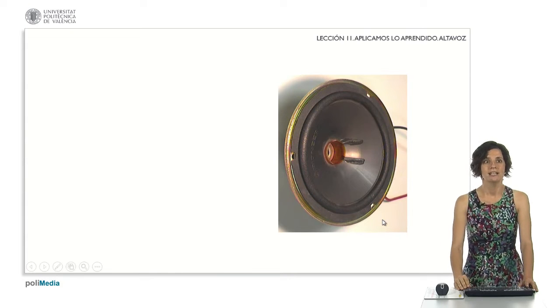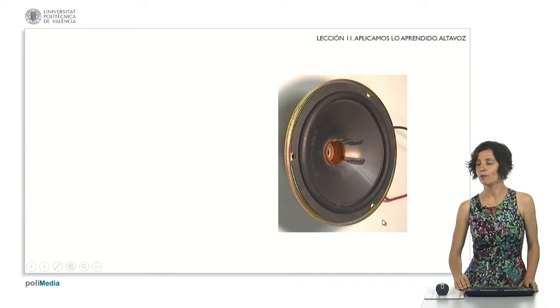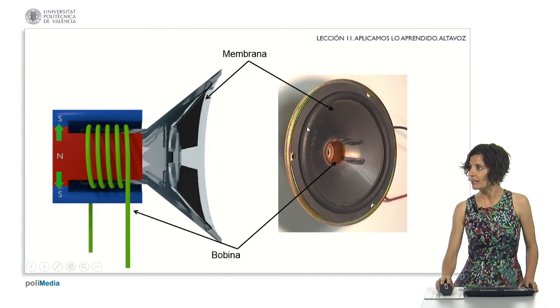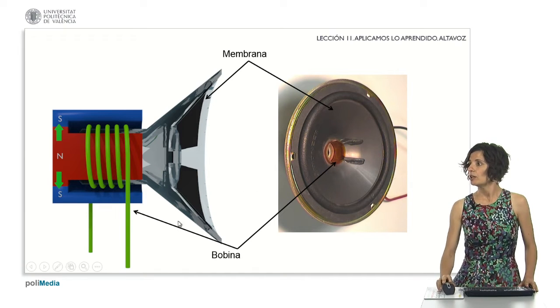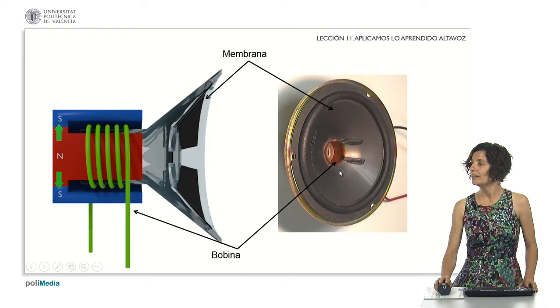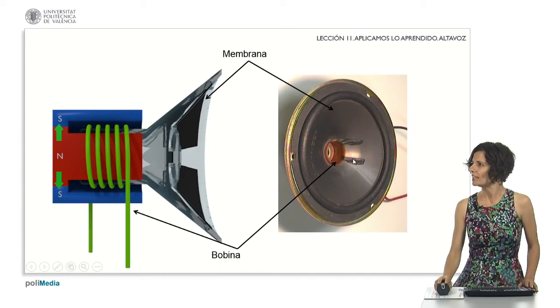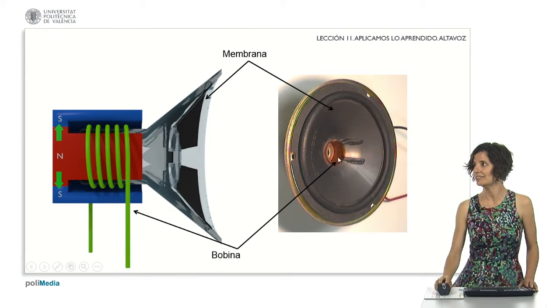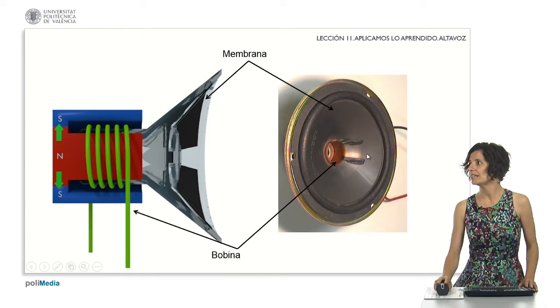Let's now examine the primary components of the loudspeaker, this time using an actual photograph. This is the membrane, which as you can see has a bellows around it so that it can move. Here, we have the coil, represented by the copper-colored winding. To ensure these coils move collectively, there's a plastic structure that holds them together. Notice how these two ends of the coil are affixed to the membrane. Coil and membrane move in unison.